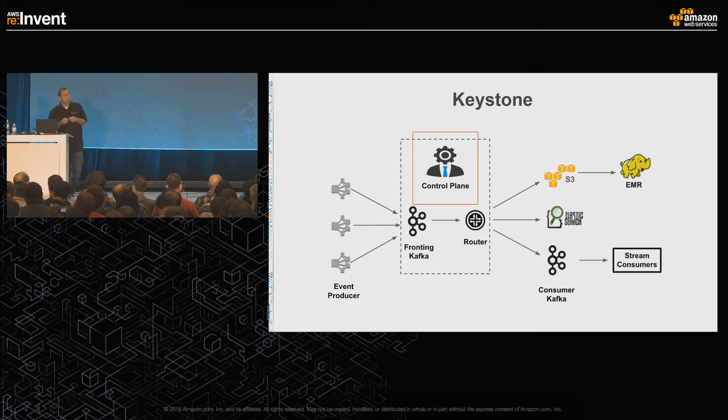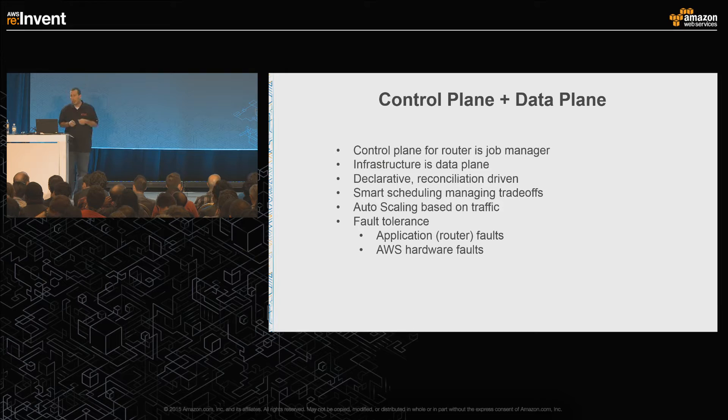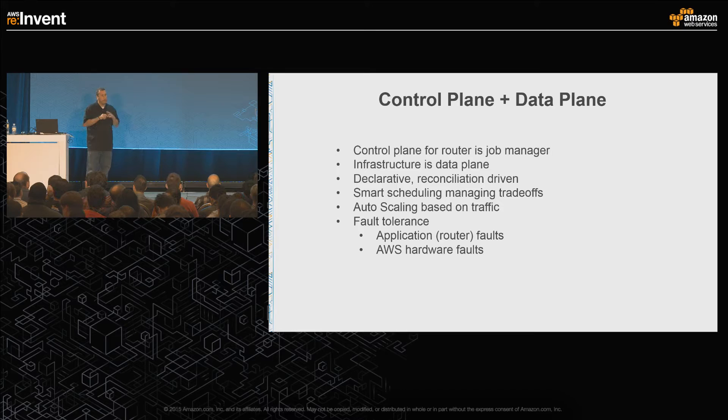The next piece is the control plane. Data movement is done by the data plane and managed by the control plane. The job manager manages state. The control plane reconciles from source of truth — for us, that's Kafka and Zookeeper. One of the things we do is manage trade-offs based on requirements: latency, throughput, resource utilization. We also have the ability to auto-scale at the control and data plane level. While we don't have auto-scale at the Kafka side, at the routing layer we wanted to be able to auto-scale, and the control plane allows us to do that.